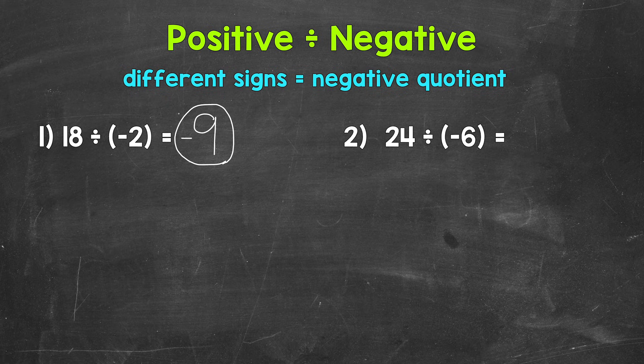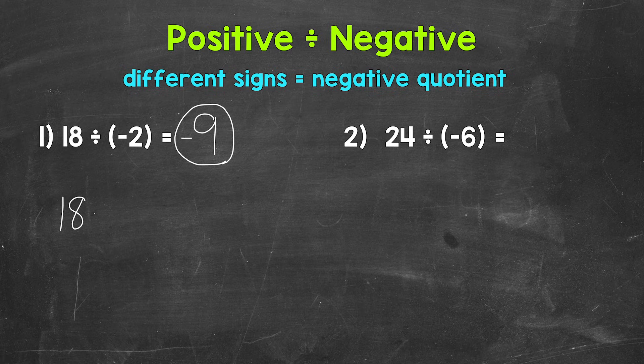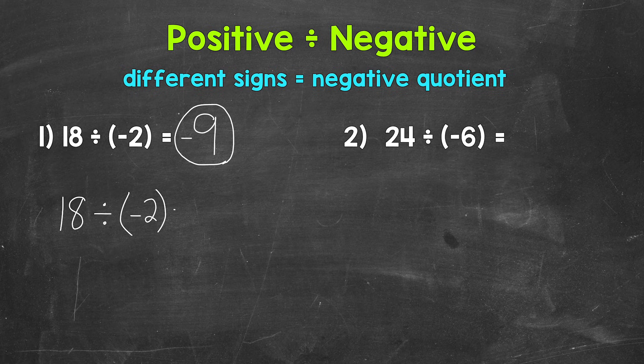Now division is the inverse or opposite of multiplication. So we can also think through this going the opposite way using multiplication. Let me rewrite our problem here. So we have 18 divided by negative 2 equals.